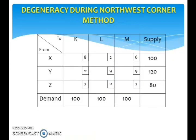Let's look at the occurrence of degeneracy during the Northwest Corner Method. Suppose that this table is the first transportation table. To find the initial solution using the Northwest Corner Method, begin at the first square. Look at the supply value in the corresponding row and the demand value in the corresponding column and choose the lowest value. Here the supply value is 100 and the demand value is 100, so write 100 here.